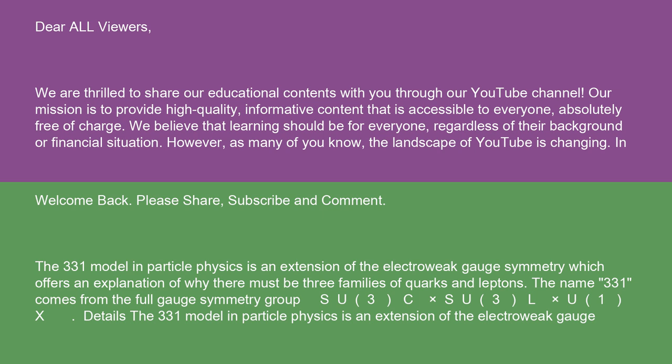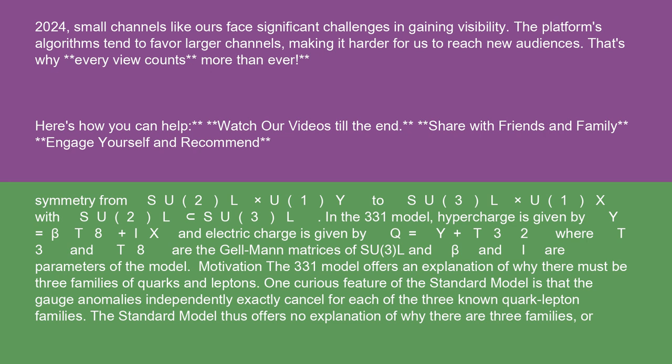The 331 model is an extension of the electroweak gauge symmetry from SU(2)L times U(1)Y to SU(3)L times U(1)X, with SU(2)L a subset of SU(3)L. In the 331 model, hypercharge is given by Y equals beta T8 plus IX, and electric charge is given by Q equals Y plus T3/2, where T3 and T8 are the Gell-Mann matrices of SU(3)L, and beta and I are parameters of the model.